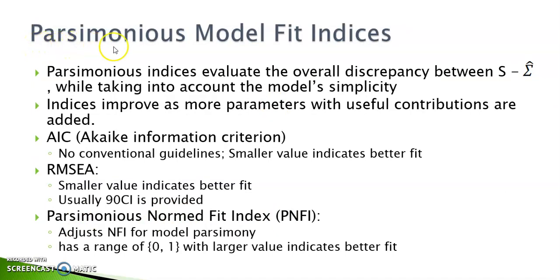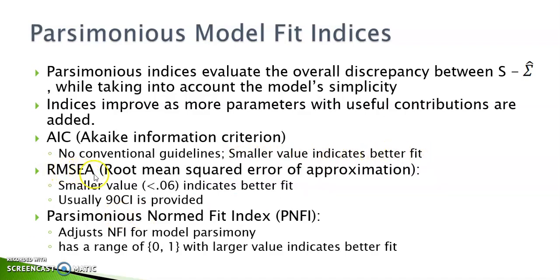Indices in the parsimonious model fit category share something in common too. They evaluate the discrepancy between the observed and the model implied matrices while taking into consideration the model simplicity. So the model fit indices will get better only when parameters that are useful to the model are added. I listed three parsimonious fit indices here. The first one is the AIC, which has no limited range. So it's often used to compare competing models. The one with smaller value indicates better fit.